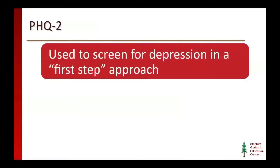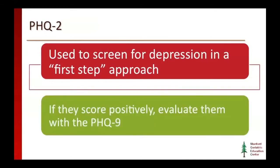Next, we'll move to screening for depression. We know that cognitive impairment and depression are linked, so it's really important to assess for both at the same time. It's useful to do this quickly, particularly if you're a primary care physician working in the community. One instrument we can use is the Patient Health Questionnaire 2, a first-step screening approach just like the MINI-COG. If they score positively, you can follow up with the full instrument, the PHQ-9.